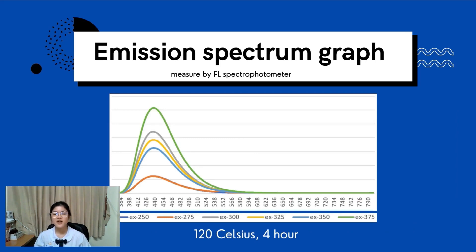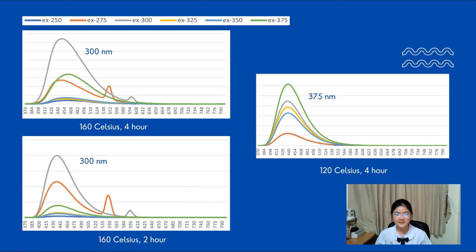And this is the graph of Nitrogen-Doped Graphene Quantum Dot synthesized at 120 degrees Celsius for two hours. However, for this temperature, only the one synthesized at four hours shows fluorescent properties. And there is another interesting point.